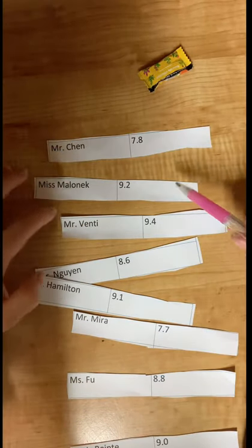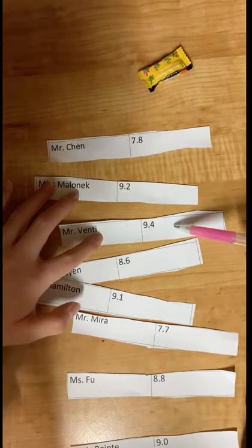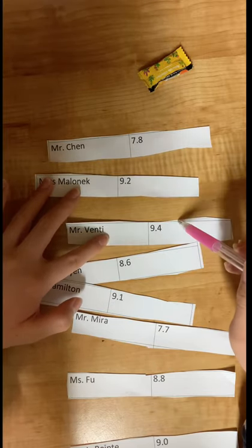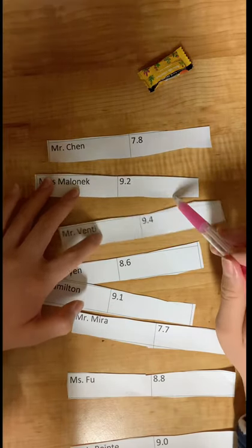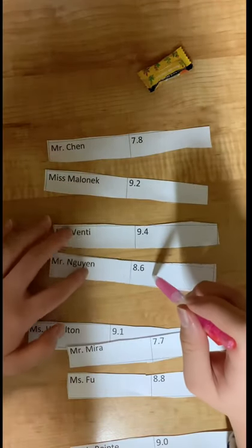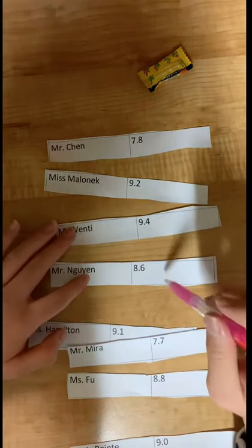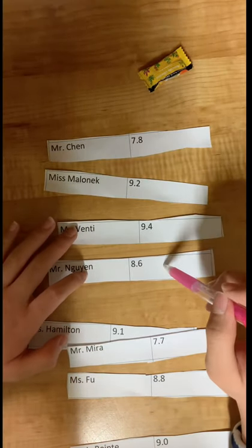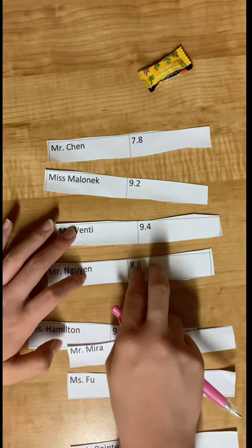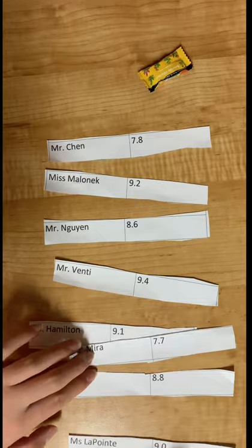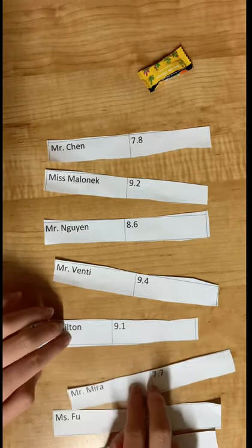Next, we'll compare Malonic to Venti. Venti has a score of 9.4 and Malonic has a score of 9.2. Since 9.2 is less than 9.4 and is above 9.4 right now, we do not have to worry about that data point. Next, let's worry about the next two data points: Venti versus Nguyen. Nguyen has a score of 8.6 and Venti has a score of 9.4. Since 8.6 is less than 9.4, it should be above 9.4. So swap 8.6 and 9.4. We'll continue this trend until we get to the bottom of the list.